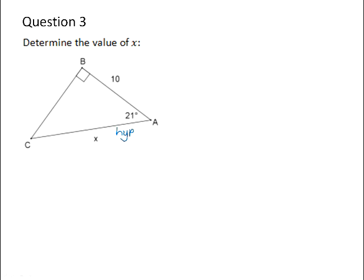So remember we can label the three sides of the triangle with reference to the 21. The side opposite the right angle is the hypotenuse, and the side opposite the angle is the opposite side, which means the remaining side is the adjacent side.